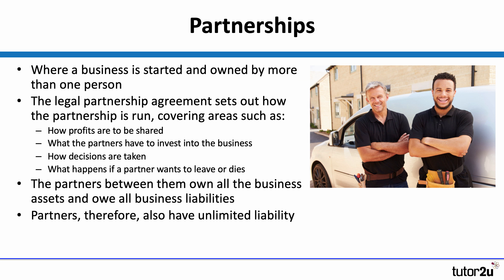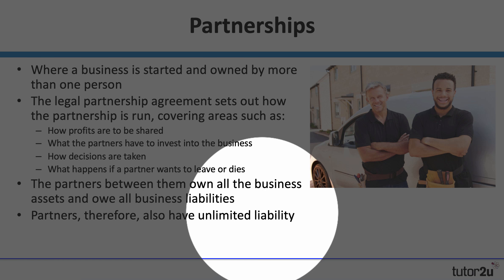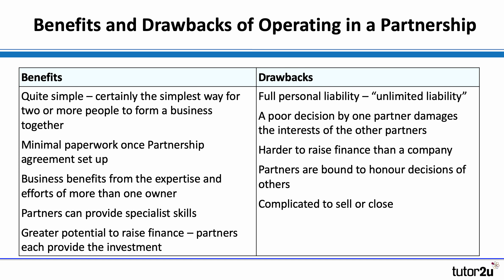Partnerships — AQA students, you don't need to know about these; Excel students need an awareness of them. It's basically where two or more people decide to set up and run a business based around a legal agreement called the partnership agreement, which explains how they're going to share profits, how decisions will be taken, and what happens when there's a change in the partnership. The key point about partnerships is that they have unlimited liability — they are unincorporated businesses. It takes a little bit longer to get set up, you need a partnership agreement, but generally it's fairly easy. The main downside is the unlimited liability.